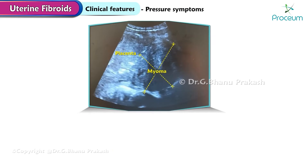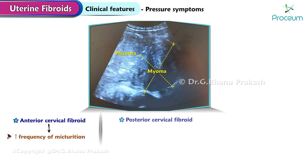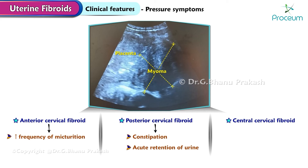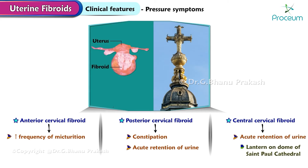Pressure symptoms: anterior cervical fibroid causes increased frequency of micturition. Posterior cervical fibroid causes constipation and acute retention of urine. Central cervical fibroid causes acute retention of urine, and it is called the 'lantern of dome of St. Paul's Cathedral'.